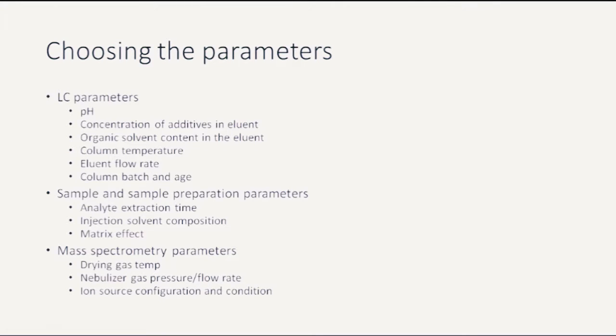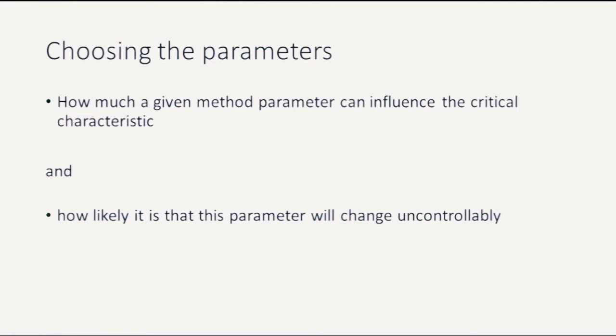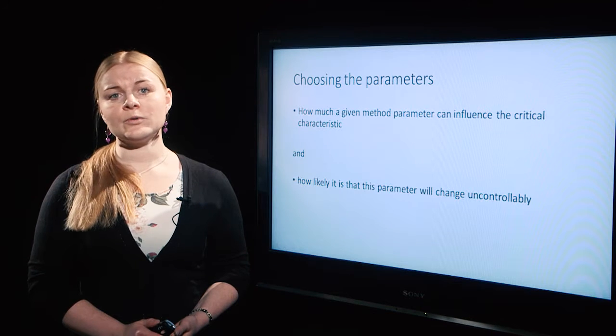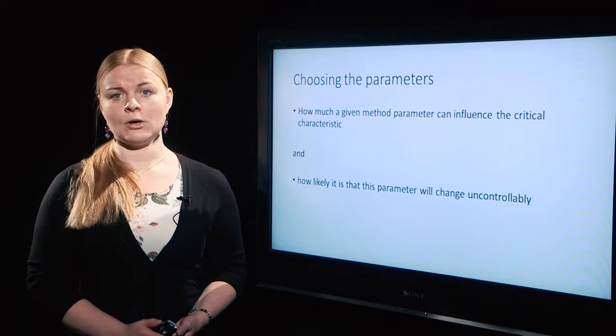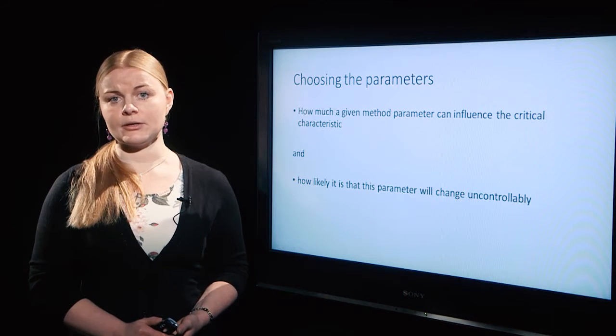Most influential method parameters for limit of quantification could be mass spectrometric parameters, mobile phase pH, and extraction parameters. The main criteria of choosing parameters are firstly how much a given method parameter can influence the critical characteristic, and secondly how likely is that this parameter will change uncontrollably. If those parameters are chosen, then we should use either one of two options to evaluate method robustness and ruggedness.